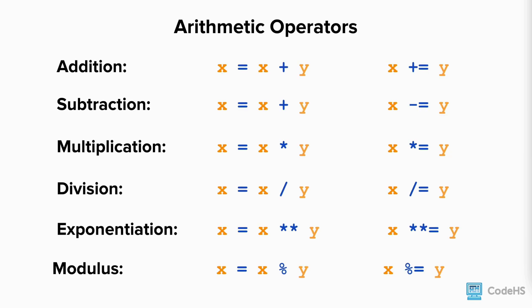But what if we wanted to add, subtract, multiply, divide by a value other than 1? We would reassign the value to the arithmetic equation. For example, if we wanted to increase x by y, we would write x equals sign x plus y. These equations can also be written in shorthand.